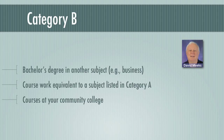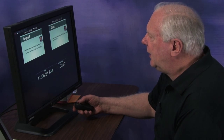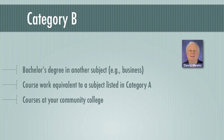Under Category B, you still must have a bachelor's degree — for example, it could be in business — but you must have coursework equivalent to a subject listed in Category A. For example, if you had a minor in biology, you may have taken enough courses in biology to qualify. You can also take courses at a community college, provided they would be transferable to a four-year college and go towards a degree in a science or technical subject.